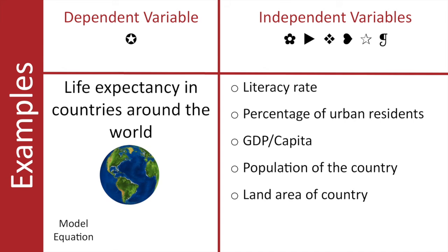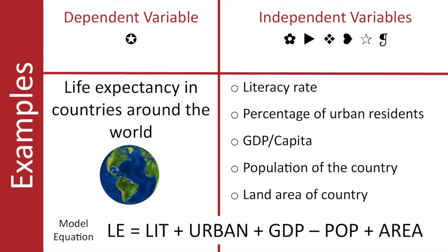The next step would be to write a model equation like this. Here you can see I've just made shortcuts or abbreviations. And here's life expectancy equals literacy plus urban population plus GDP per capita minus population of the country plus the total land area of the country. And as you can see by the plus signs, I think that these variables would have a positive effect on the life expectancy, with the exception of population. Maybe I think that big populations are detrimental to your health. At this point I'm really just hypothesizing.